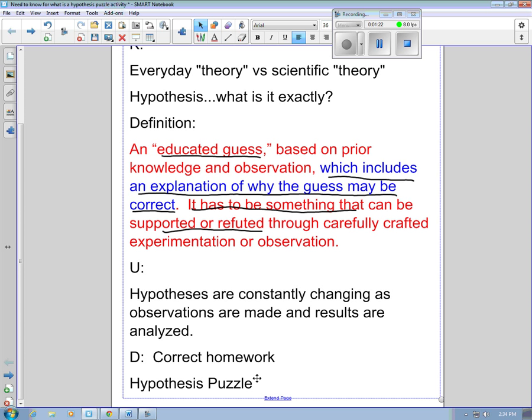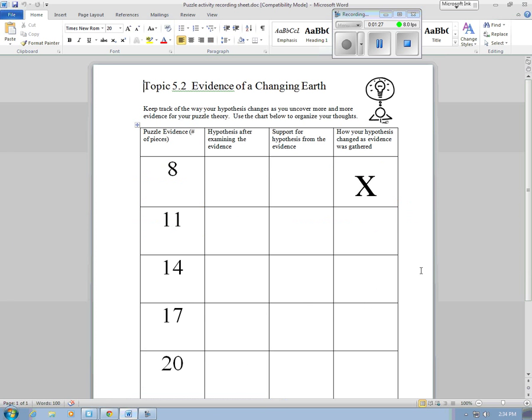And we completed that in class. The handout that we used was this one. And it basically is a way to keep track of how your hypothesis changes as you get more and more puzzle pieces in front of you. So you start with eight puzzle pieces. You make a hypothesis. You support it with some observations. Then you put three more pieces of the puzzle out on the table, look at them, see if your hypothesis has changed and why. And then you keep going.